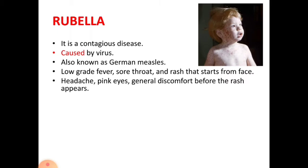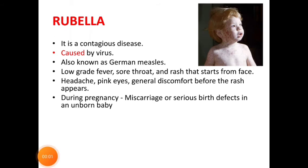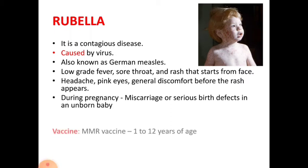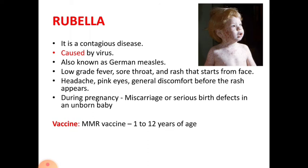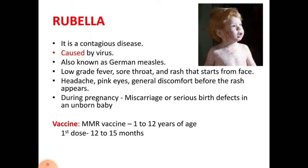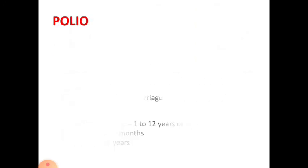Some people may also have headache, pink eyes, and general discomfort before the rash appears. During pregnancy, rubella can cause miscarriage or serious birth defects in an unborn baby. For the prevention of rubella, the MMR vaccine should be given between 1 to 12 years of age. The first dose should be given at 12 to 15 months of age and the second dose at 4 to 6 years of age.